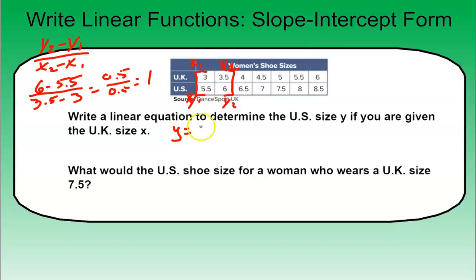So I'm going to have a 1x, or I can just say x. And then the starting point, or to find the b, I would have to find the b first. So plus b. So to do that, I'm going to pick a point, an x, y coordinate, to plug in for x and y to find my b.